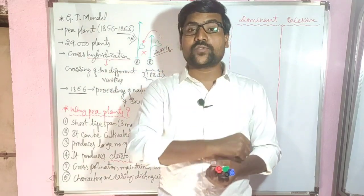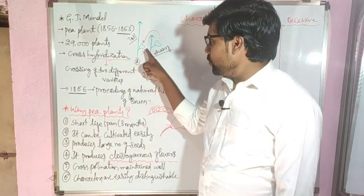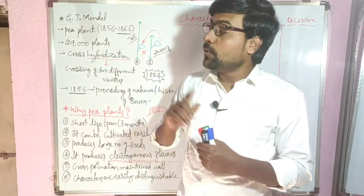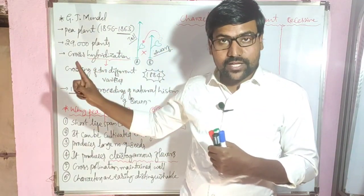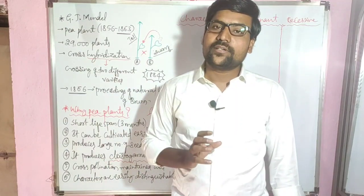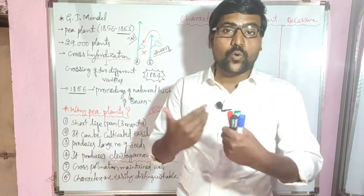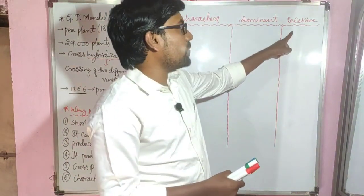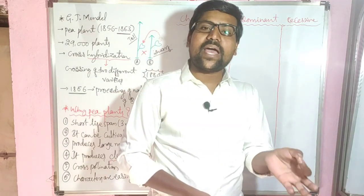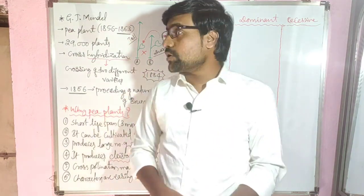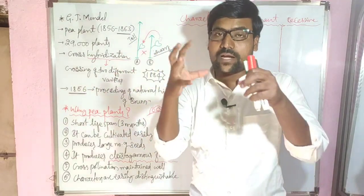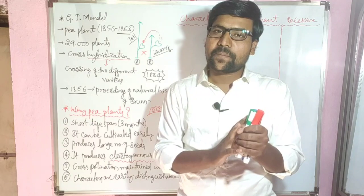When we cross both varieties, in the resulting plant, one form is expressed — that is the dominant form — and the other form does not express — that is the recessive form. Every character will have two forms: a dominant form which expresses and a recessive form which does not.